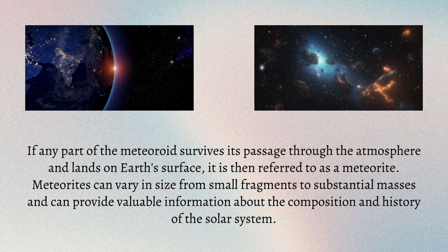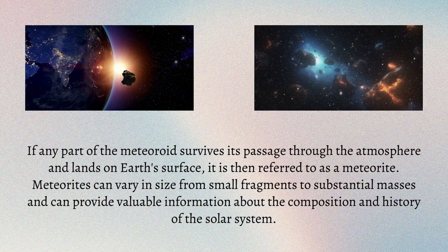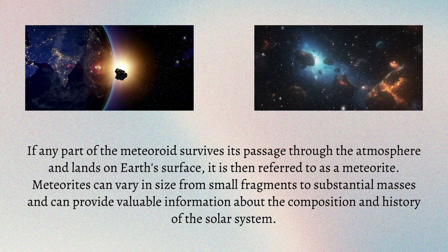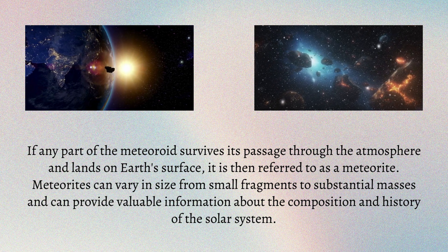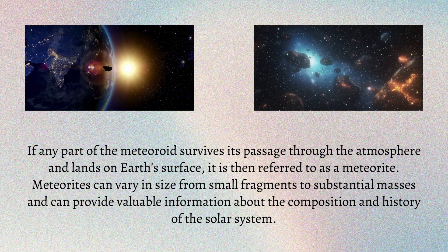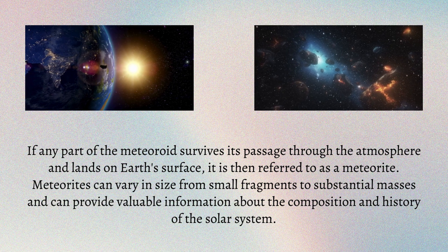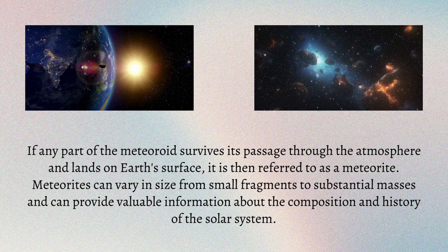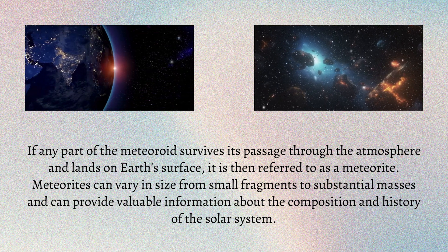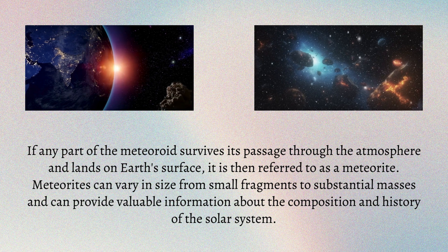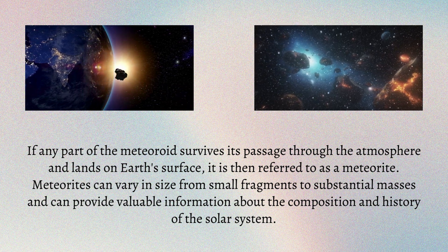If any part of the meteoroid survives its passage through the atmosphere and lands on Earth's surface, it is then referred to as a meteorite. Meteorites can vary in size from small fragments to substantial masses and can provide valuable information about the composition and history of the solar system.